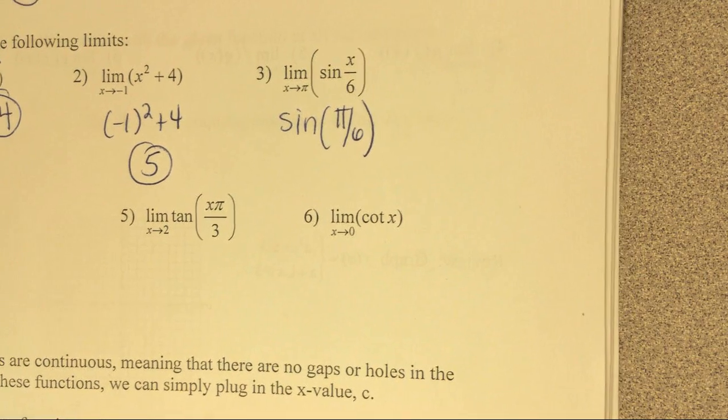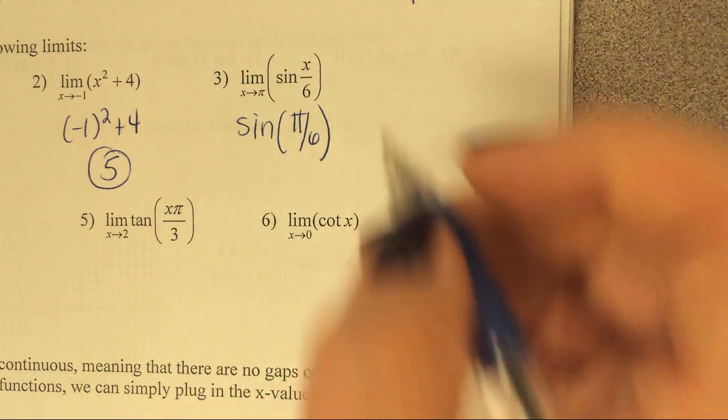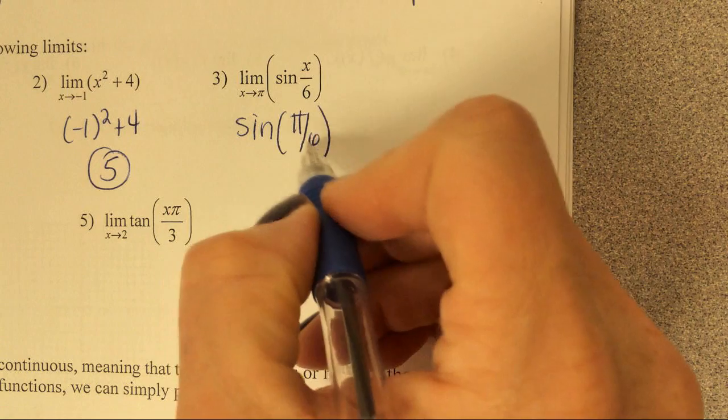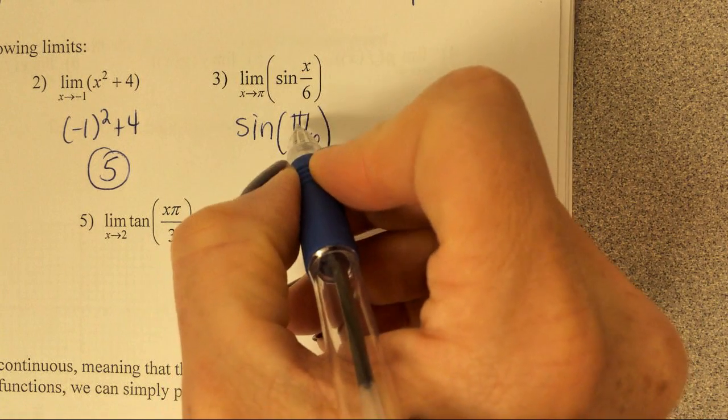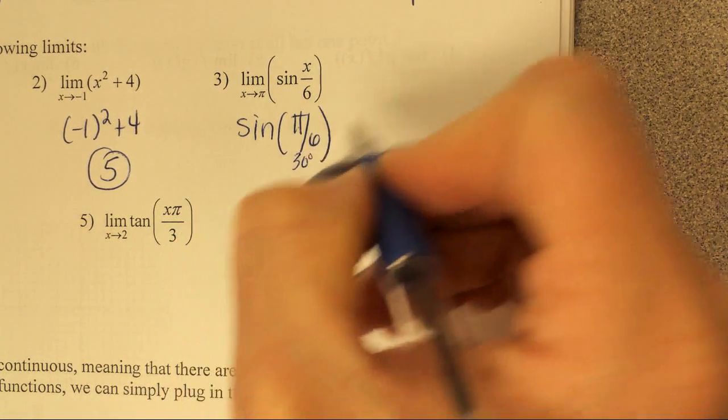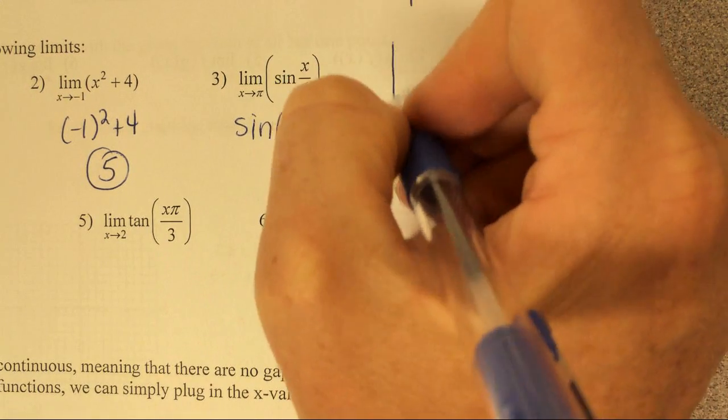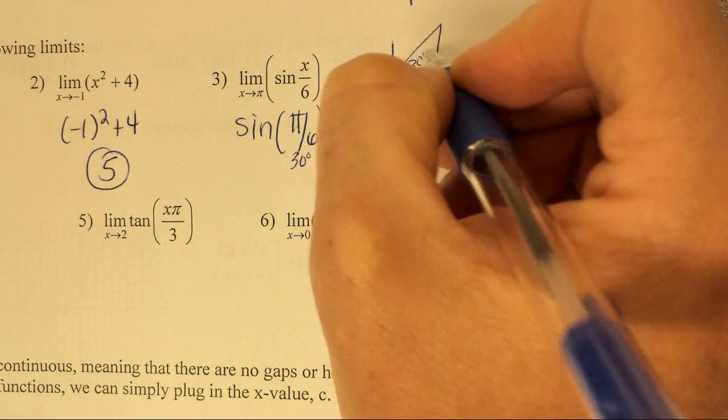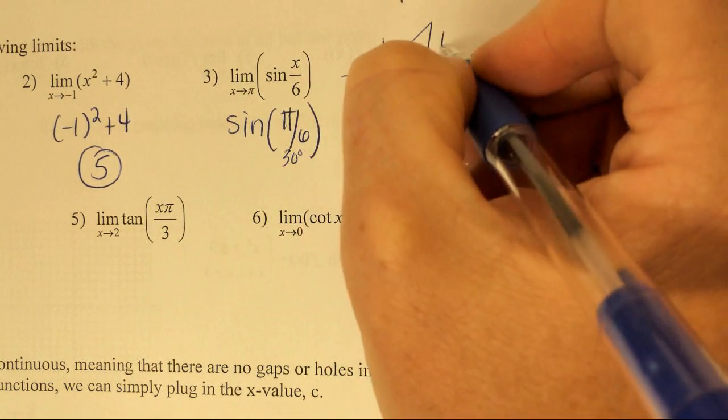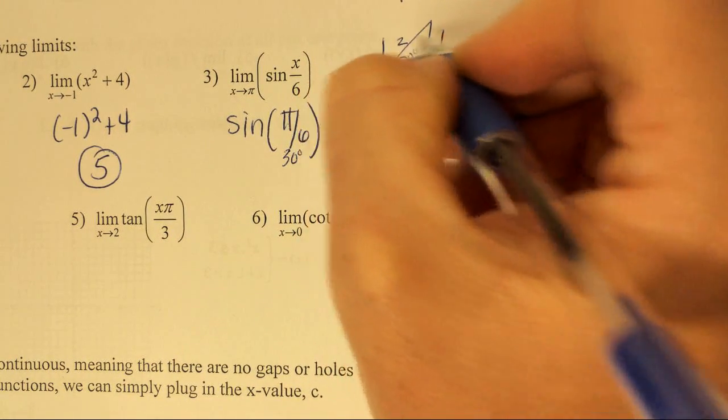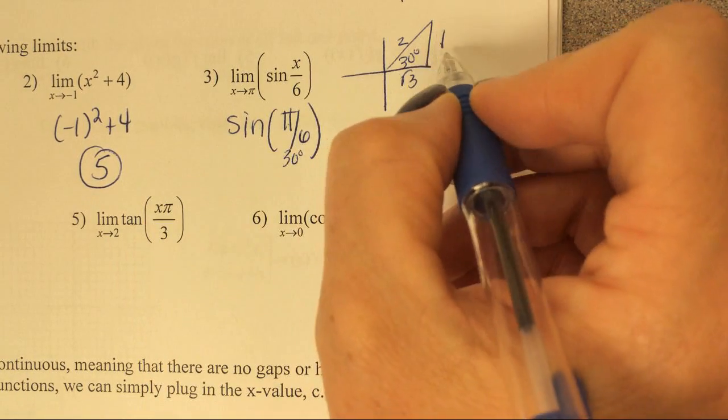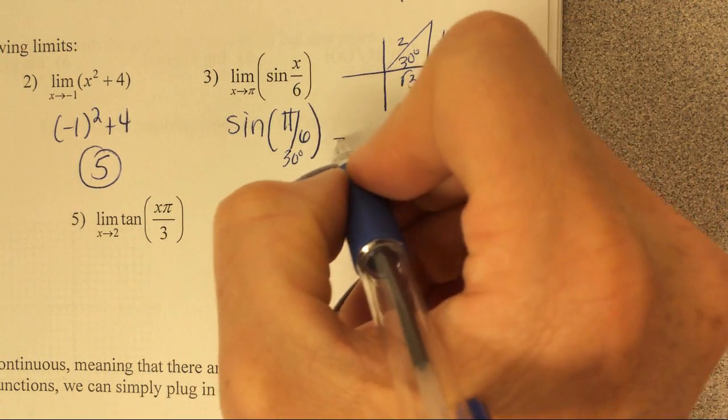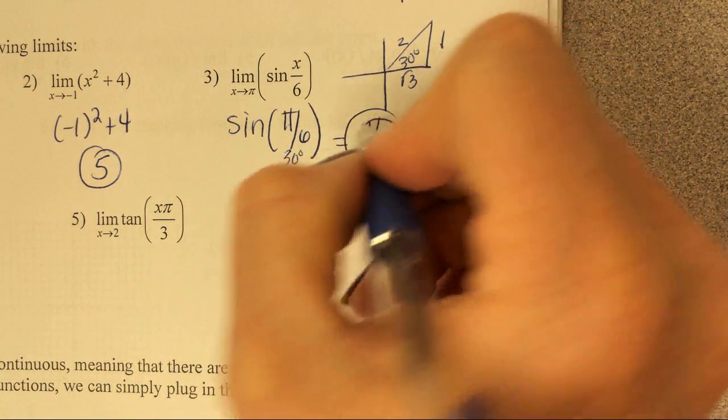Okay, so for number 3, the sine of pi over 6. First thing we want to do is think what's pi over 6 in degrees. Well, it's 180 divided by 6, that's 30 degrees. So now if you don't know the sine of 30 degrees, you might want to go back and draw a picture of it. 30 degrees goes 1, radical 3, and 2. Sine is going to be opposite over hypotenuse, so that limit is going to be 1 half.